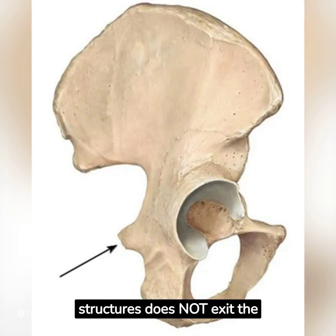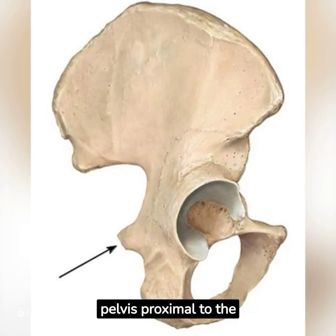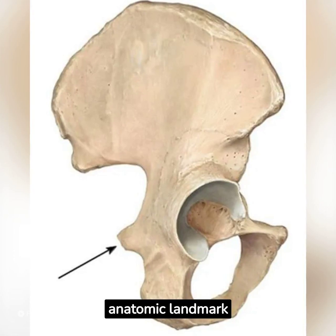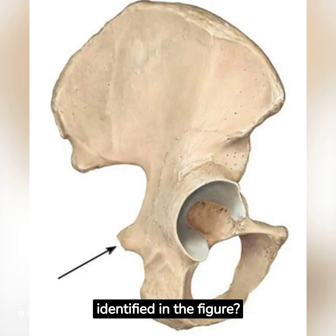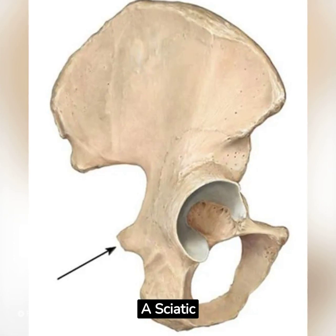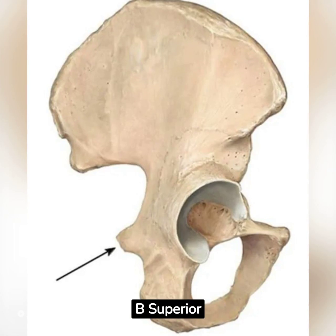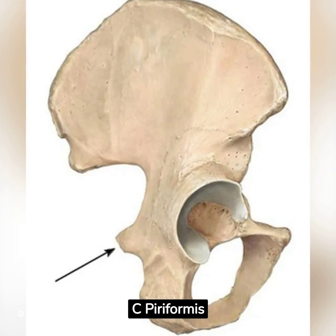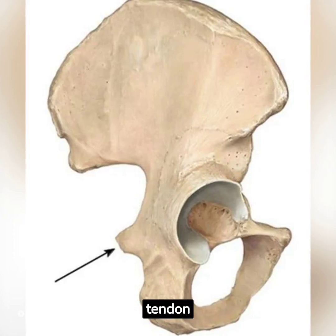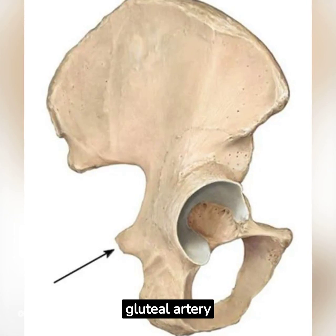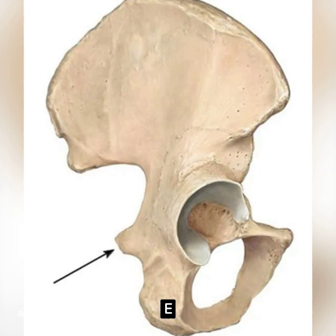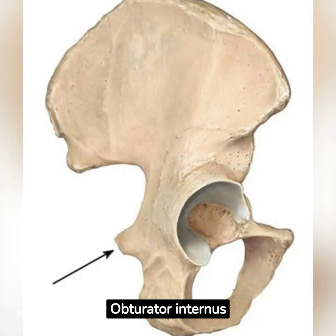Which of the following structures does not exit the pelvis proximal to the anatomic landmark identified in the figure? A. Sciatic nerve. B. Superior gluteal artery. C. Piriformis tendon. D. Inferior gluteal artery. E. Obturator internus.